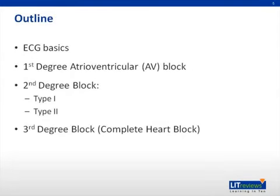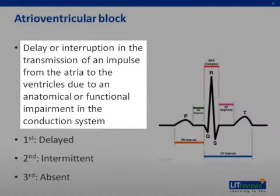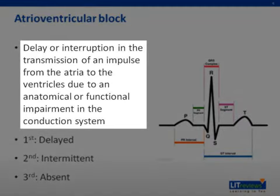First, we will go over a few basics of the EKG in heart block, then discuss each type in more detail. The definition of heart block is the delay or interruption of transmission from the atrium to the ventricles. This can be from a structural or anatomical cause, or from a functional impairment of the conduction system.